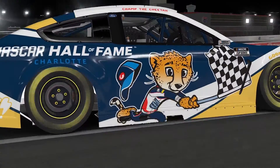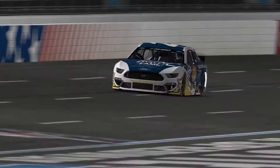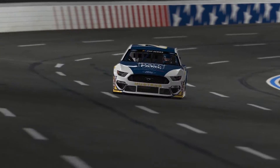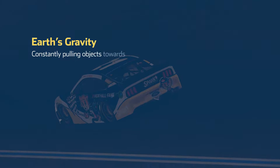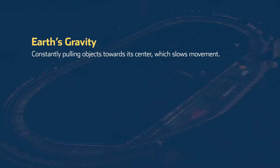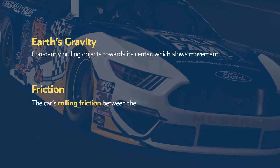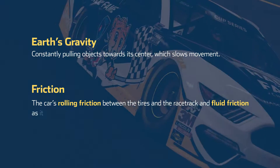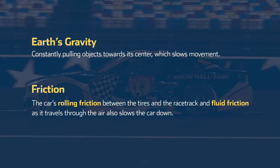As it races around the track, it cannot stay in motion forever because of the outside forces acting on it: gravity and friction. Earth's gravity is constantly pulling objects toward its center, which slows movement. The car's rolling friction between the tires and the racetrack, and fluid friction as it travels through the air, also slows the car down.